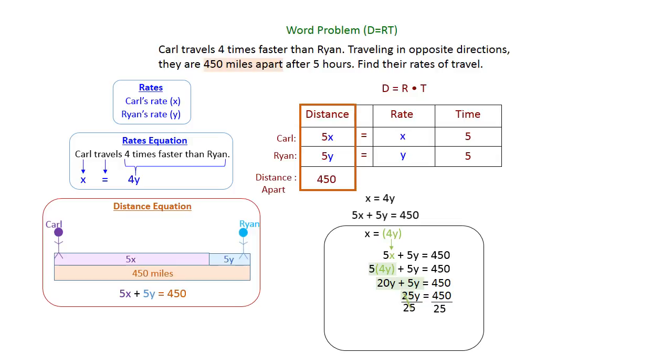Now on that left-hand side we need to divide by 25. That gives us Y = 18, or since it's a rate, 18 miles per hour. Y was Ryan's, so that's Ryan's rate. We've got one, we just have to find the other one. We're going to take the easiest equation, X = 4Y, and drop that Y = 18 that we just found into it. That gives us 4 times 18, or 72 miles per hour, and that's Carl's rate.